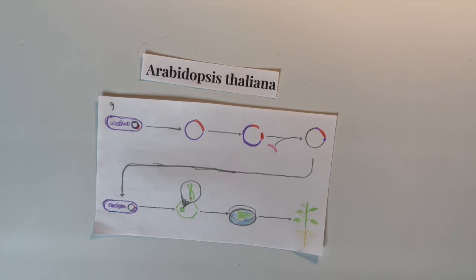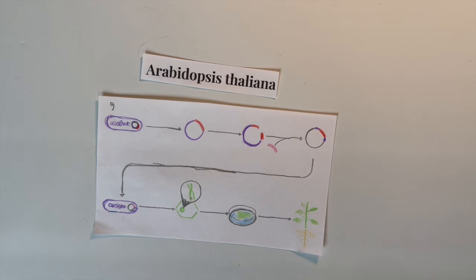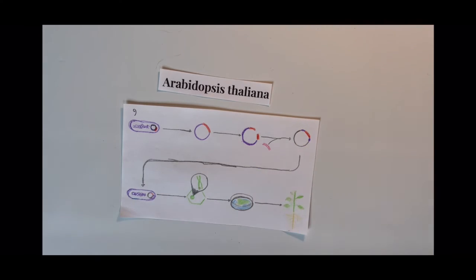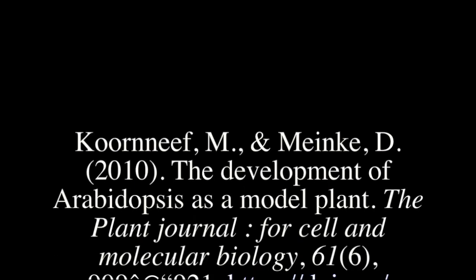It's important to note that Arabidopsis thaliana was the first plant and third multicellular organism to be completely sequenced, preceded only by roundworms and fruit flies. And finally, it's the most studied flowering plant by total publications, beating out maize, corn, tomato, peas, and rice.